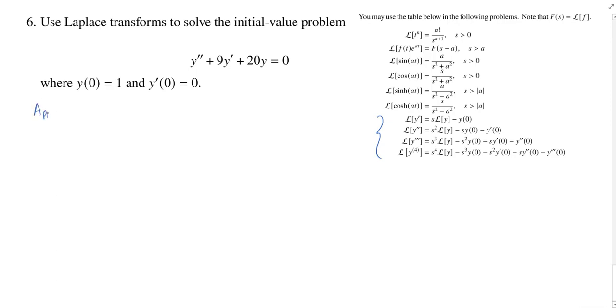So first, we need to take the Laplace transform of y double prime. So let's write this down. The Laplace transform of y double prime. Well, this is given over here in the table. It's going to be s squared Ly minus s times y of 0 minus y prime of 0. And y of 0 is 1, y prime of 0 is 0. So we can simplify a little bit. We have s squared Ly minus s times 1 is minus s.